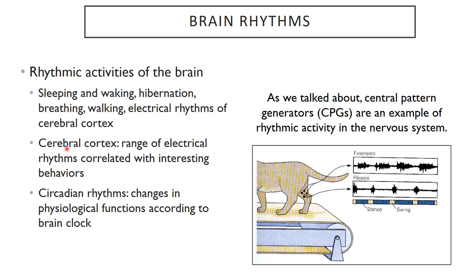The cerebral cortex has a number of important rhythms, and there's a range of electrical rhythms that are correlated with very interesting behaviors. Last, of course, we have circadian rhythms, where we can see changes in the physiological functions of our body according to a brain clock that is more or less synchronized to 24 hours.